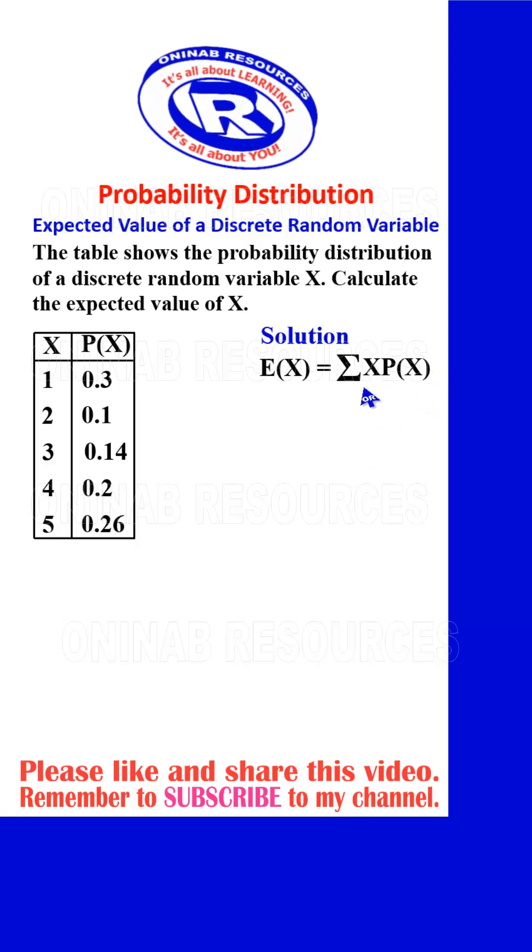Whereas x is representing the variable x, ranging on this table from 1 to 5. And then P(X) is the respective probability of x, which is in the second column here. And what we need to do here is to find the product of x and the respective probability, which means we are going to create another column for XP(X).